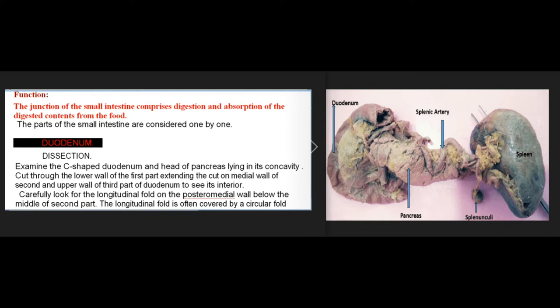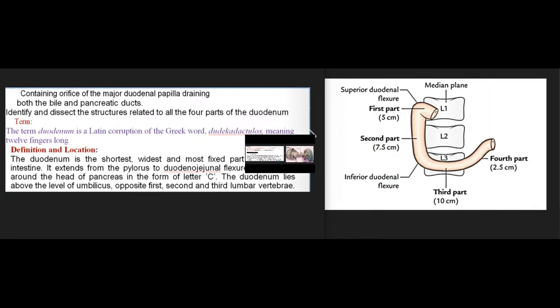In dissection, examine the C-shaped duodenum and head of pancreas lying in its concavity. Cut through the lower wall of the first part, extending the cut on the medial wall of the second and upper wall of the third part of the duodenum to see its interior. Look carefully for the longitudinal fold on the posteromedial wall below the middle of the second part. The longitudinal fold is often covered by a circular fold containing the orifice of the major duodenal papilla, draining both the bile and pancreatic ducts.